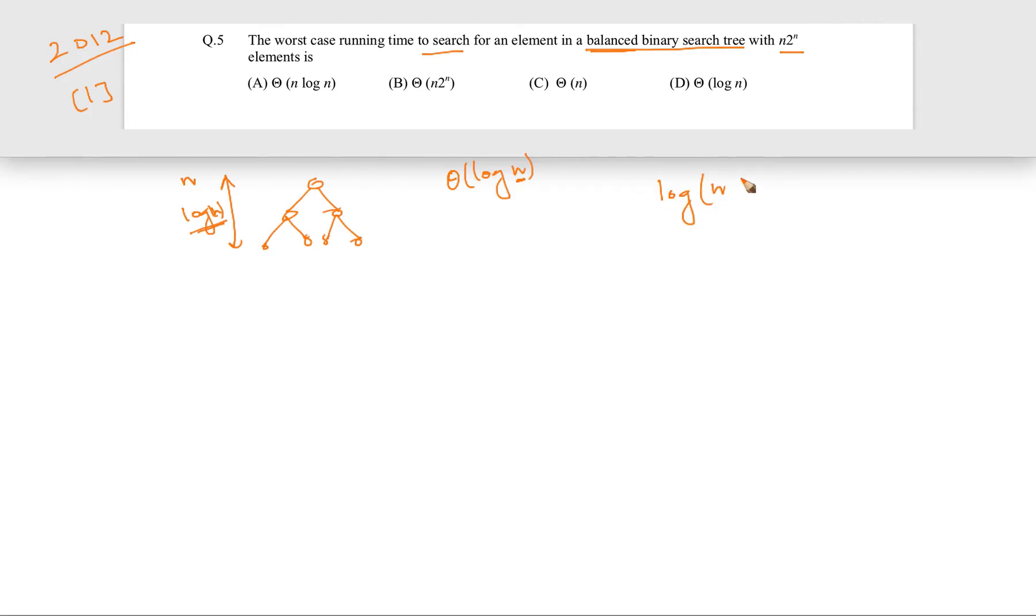Which will basically come out to be log n, so it is base 2 definitely, right? So it is log base 2 of n plus log base 2 of 2^n. And this thing will basically come out to be n.